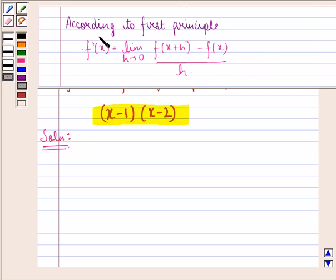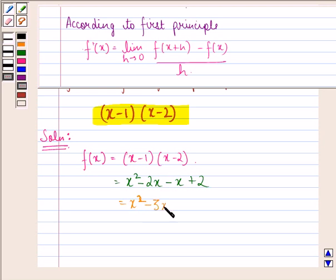Here we have to find out f'(x). First of all, we find out function at x+h. For that, we see that function at x is given to be (x-1)(x-2). So first of all, we open the bracket here and we get x into x is x², x into -2 is -2x, minus x plus 2. And that is equal to x² - 3x + 2.